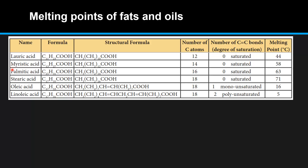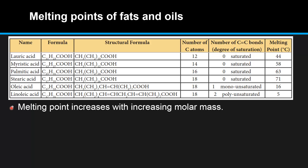The first four fatty acids in this table are saturated fatty acids, which means they have carbon to carbon single bonds. The number of carbons goes from 12 to 14 to 16 to 18, so the molar mass of the fatty acid increases as the number of carbons increases. The effect of this increasing molar mass is that the melting point increases from 44 to 58 to 63 to 71 degrees C. So melting point increases with increasing molar mass.